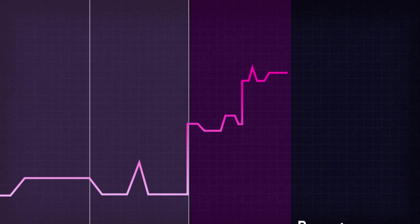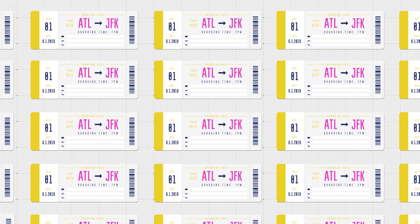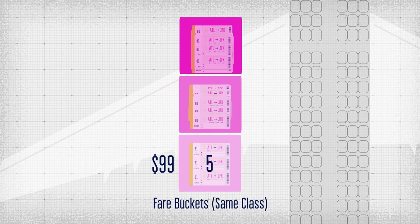Imagine there are 50 economy class seats on the aircraft for a given flight. Even though these seats belong to the same class, an airline doesn't want to sell all of them at the lowest cost, nor at the highest cost. Carriers divide all those 50 seats into multiple fare groups or buckets. For instance, there will only be five seats at the lowest fare with minimum services and smallest bag allowances. Once these five seats are sold, the fare bucket is closed.